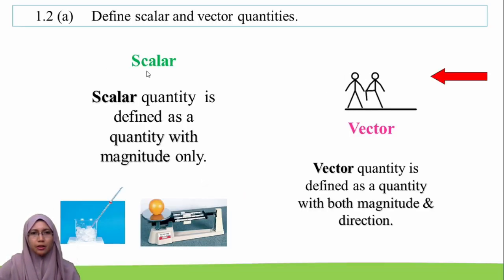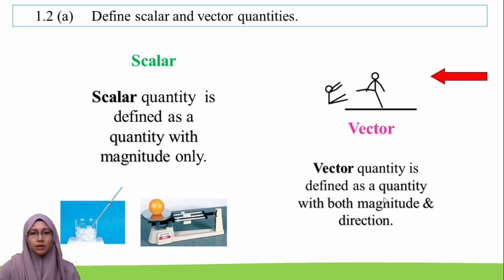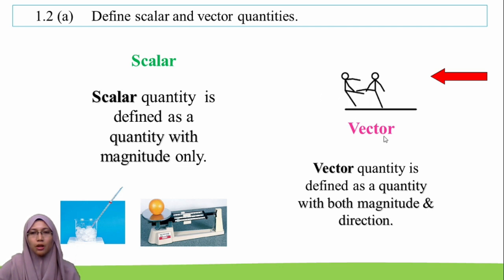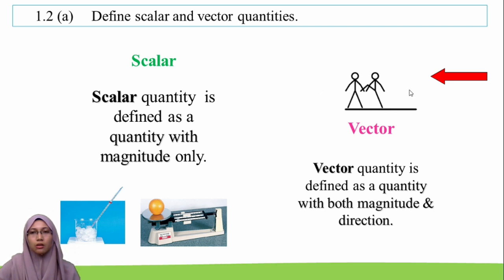Scalar quantity is defined as a quantity with magnitude only, and vector quantity is defined as a quantity with both magnitude and direction. For example, this boy is kicking the other boy — he gives a force which has both magnitude and direction. The magnitude is the strength of the force, and the direction is the direction of the force towards the other boy.